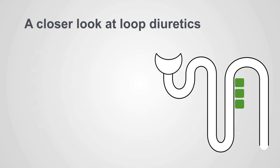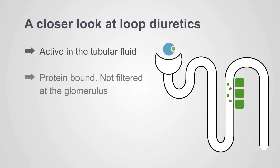Loop diuretics are active in the tubular fluid. They don't act from the basolateral membrane. They don't get to their active site via the blood — they need to get into the tubular fluid to work.